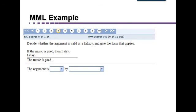So here's an example from my math lab. Decide whether the argument is valid or a fallacy and give the form that applies. In this type of problem, all we have to do is put it into P's and Q's, and then pick which one of the forms it matches up with.